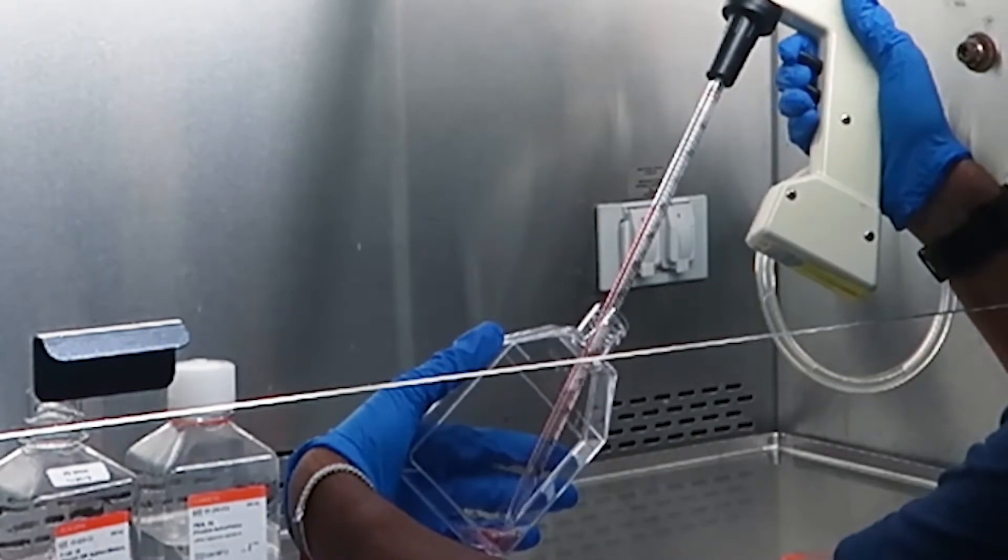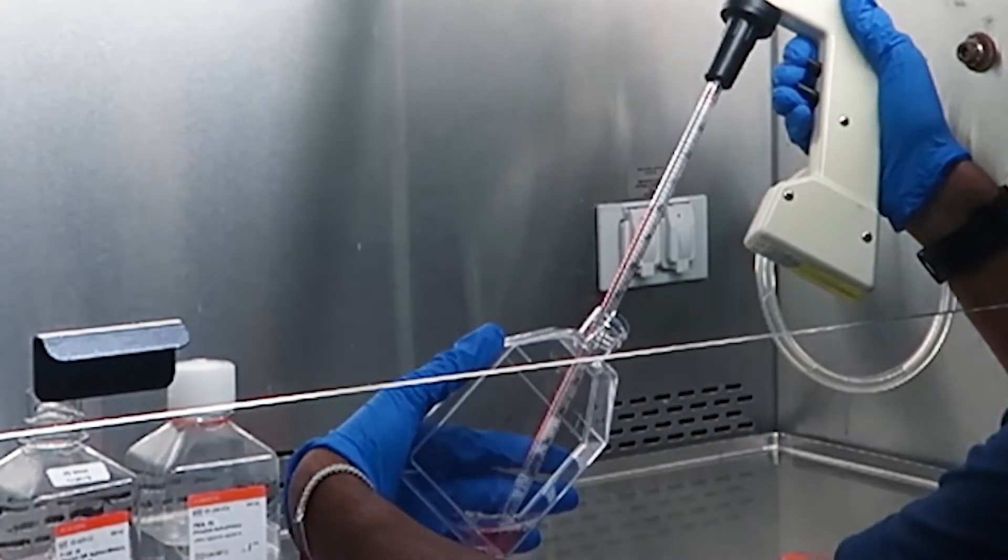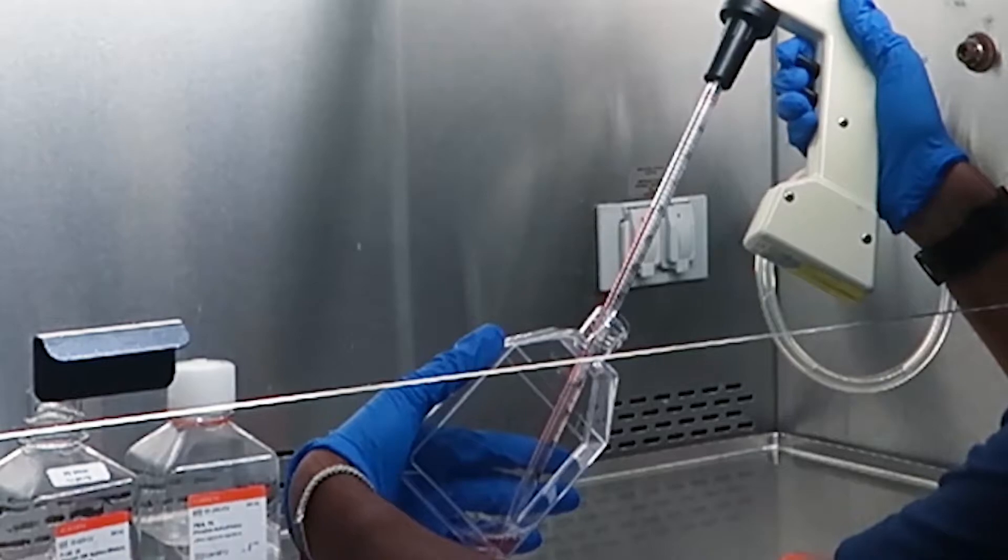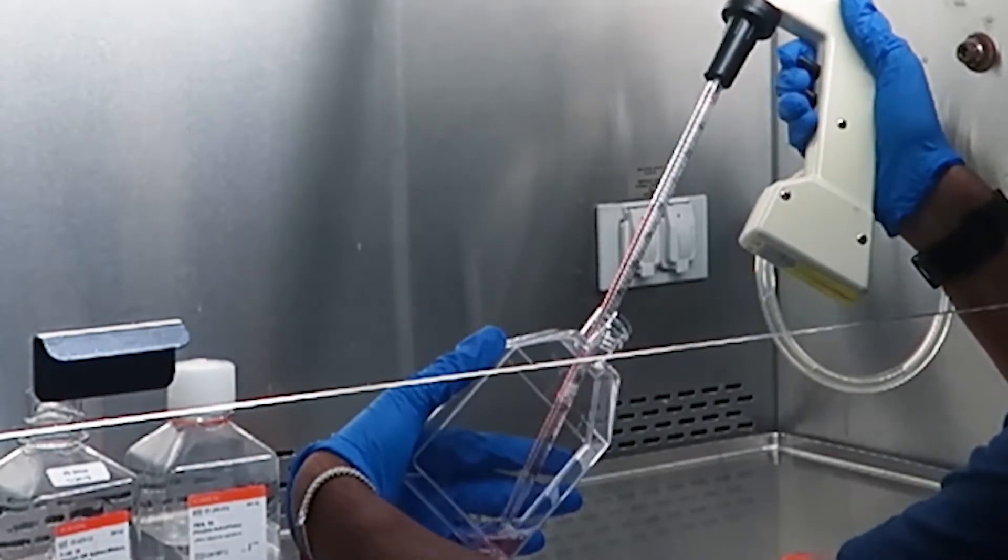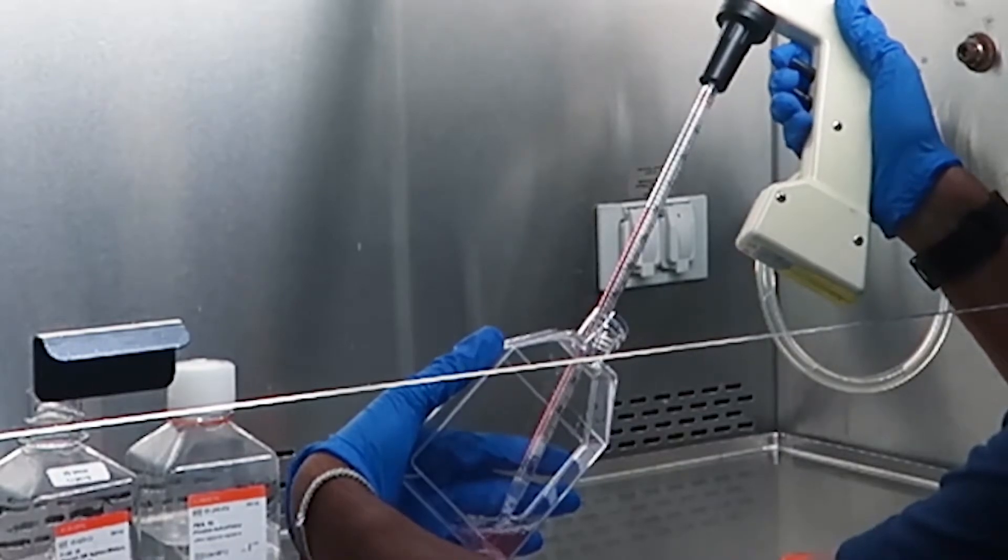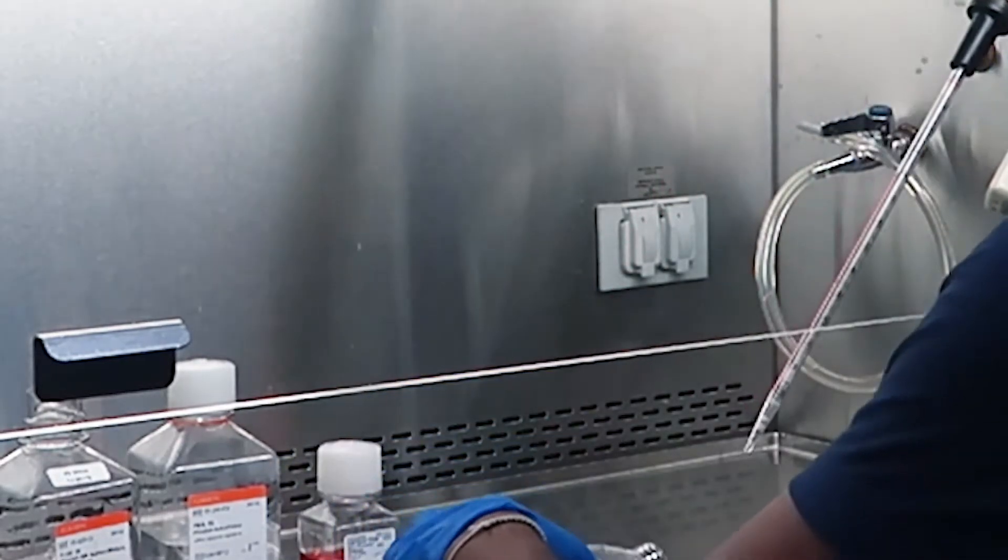There's also a balance when pipetting these cells because pipetting these cells for too long or too fast can cause mechanical damage and break the cells. Earlier passages or primary cell lines are more susceptible to this than later passages.